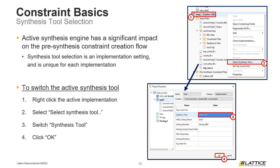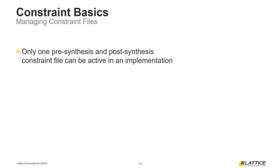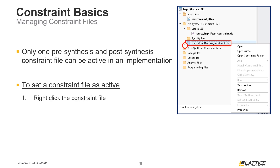The last thing we will discuss in this section is the process for managing constraint files. For each project implementation, there can only be one active pre-synthesis and post-synthesis constraint file. The active constraint file can easily be switched using Radiant's file list tab. To switch the active constraint file, right-click the name of the constraint file and from the drop-down select 'Set as Active.' This will set the selected constraint file as active and all other constraint files as inactive.